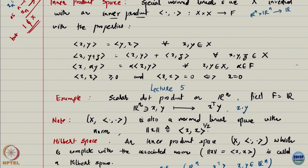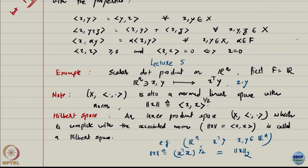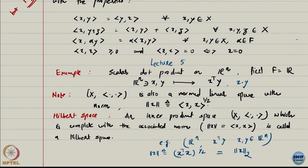You can always use an inner product to create a norm. In R^n, the inner product is x^T y, and replacing y with x gives x^T x, whose square root is exactly the 2-norm. So the norm you get from an inner product is a particular norm — in this case the 2-norm. You cannot get the infinity norm from this inner product. It depends on which inner product you have.